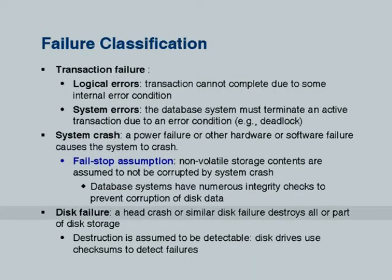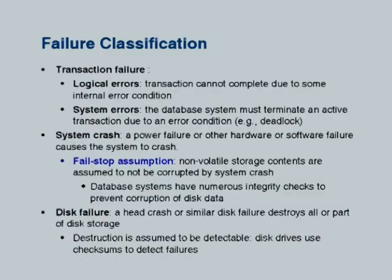What about disk failure? First of all, any corrupt bytes — if a disk fails and modifies a few bytes — that is detected using checksums. If a disk fails and makes data unreadable, you use a RAID system so that there is another disk with that data. What if the data center burns up? Then you have another copy of data somewhere else. There are other ways to deal with disk failure.